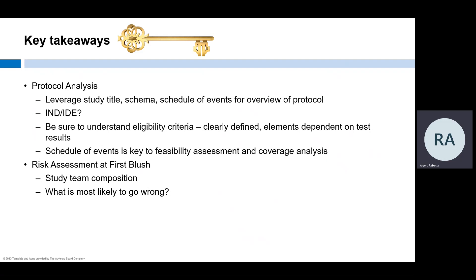Let's review the key takeaways from today's module. Use the study title, schema, and schedule of events to make your protocol review efficient. Consider whether an IND or IDE will be necessary. Make sure eligibility criteria are clearly defined and that you understand which elements depend on test results so you can plan accordingly. The schedule of events is a key component of feasibility and coverage analysis. When first assessing risk, look at your study team composition and consider whether the team has all the skills, experience, and licensure to conduct the trial. Have a team discussion about what is most likely to go wrong.